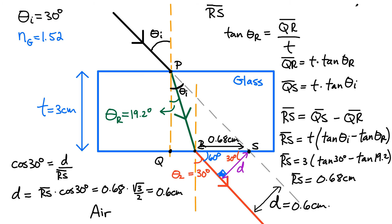And there you go. That's the problem for calculating the lateral deflection of a light ray incident on a glass slab, using a little bit of trigonometry and just paying attention to how we label all the angles.